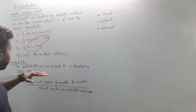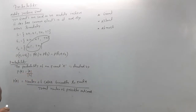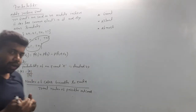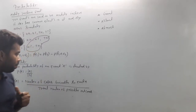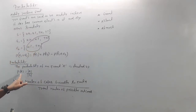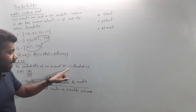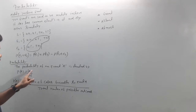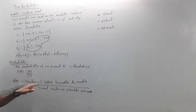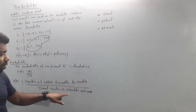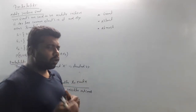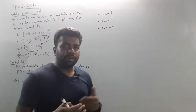Now the main definition — the probability formula. We know probability means possibility. The probability of an event A is denoted P(A) = |A| / |S|, where |A| is the number of cases favorable to event A divided by the total number of possible outcomes.